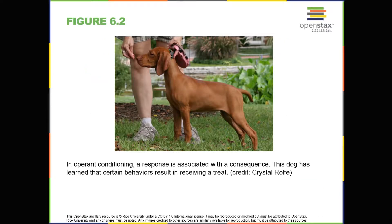Birds build nests and migrate as winter approaches. Infants suckle at their mother's breast. Dogs shake water off wet fur. Salmon swim upstream to spawn, and spiders spin intricate webs. What do these seemingly unrelated behaviors have in common? They're all unlearned behaviors.